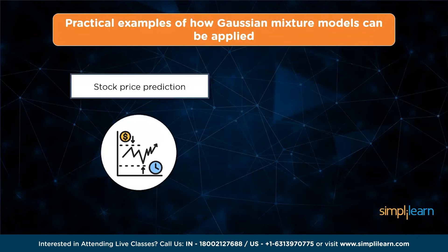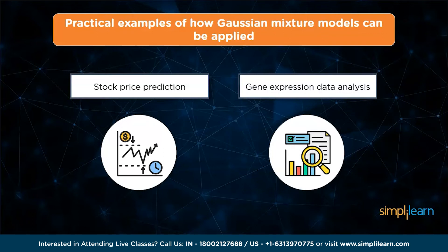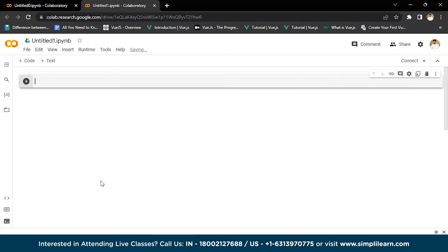Gaussian mixture models are also employed in gene expression data analysis. They can be used to identify differentially expressed genes between two conditions and determine which genes may be due to specific phenotype types or disease states.